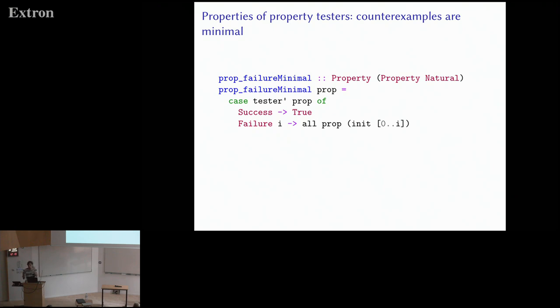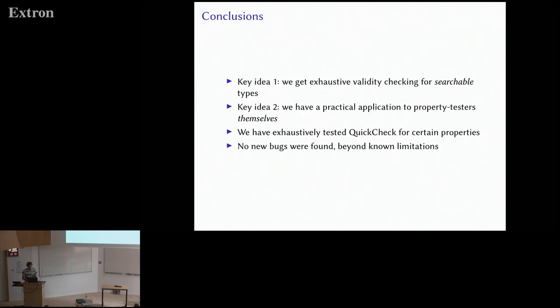There's another property you might expect QuickCheck to satisfy. It tries to minimize or reduce counterexamples. So you might expect that if it finds a counterexample i, then up until i the property should be satisfied. Is this property satisfied? Actually, it's not, because this reduction of counterexamples is limited in depth.